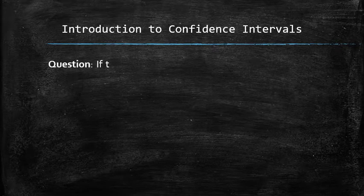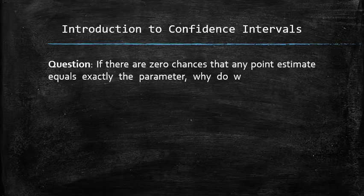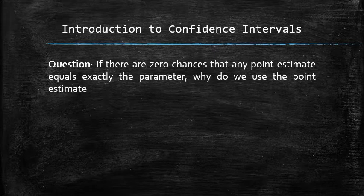So if there are zero chances that any point estimate equals exactly the parameter, why do we use the point estimates? Consider the following example.